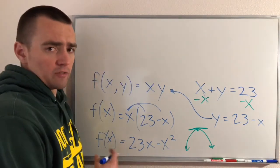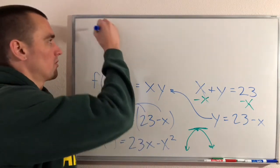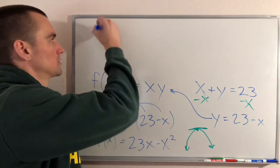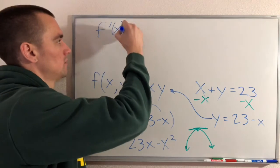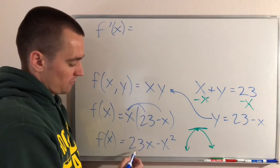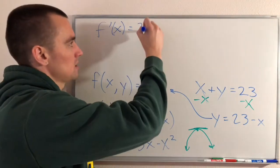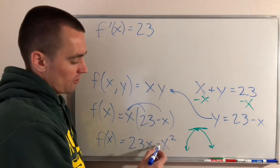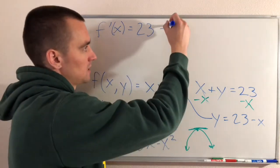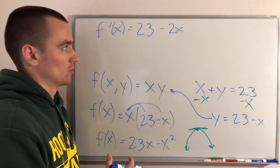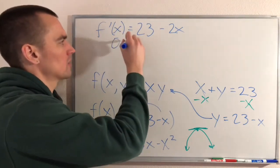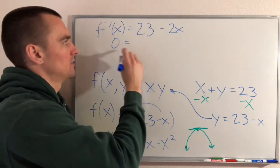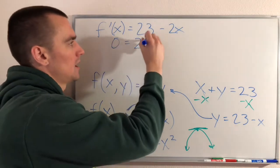So to find the critical number of this function, we're just going to take the derivative of it and set it equal to zero. So first we need to find the derivative. The derivative of 23X is just 23, and then the derivative of negative X squared is just going to be negative 2X based on the power rule. Now to find the critical number we can just take our derivative, set it equal to zero, and solve for X.